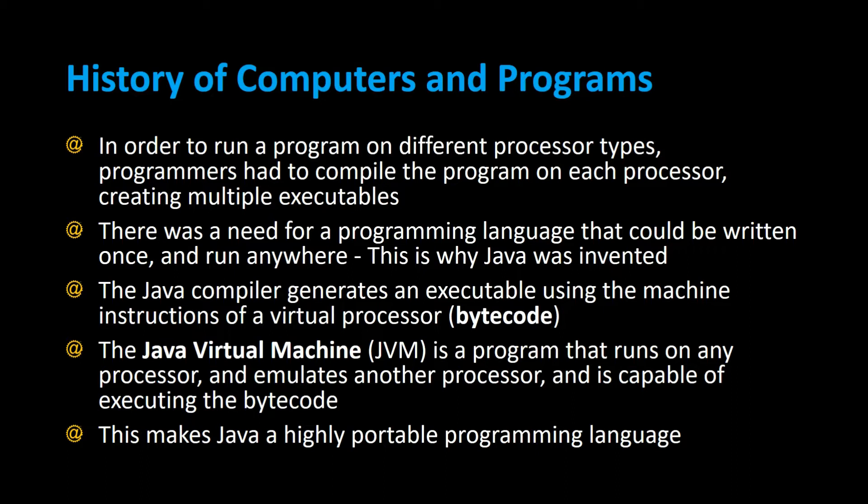For example, if you had a C program you created, you would have to compile it separately on a MacBook, on a Windows machine, or on a Linux computer in order for it to run on that computer. So there was a need for a programming language that could be written just once and run anywhere — and this is why Java was invented.